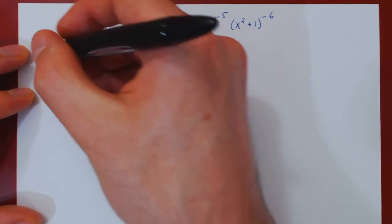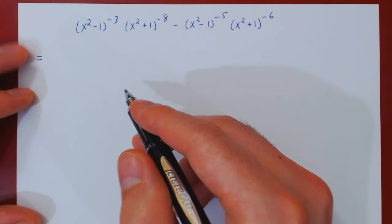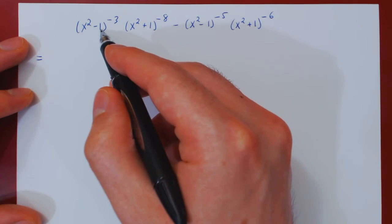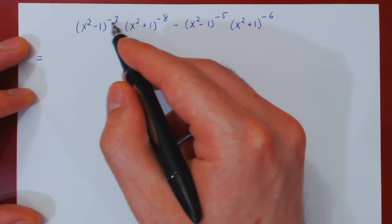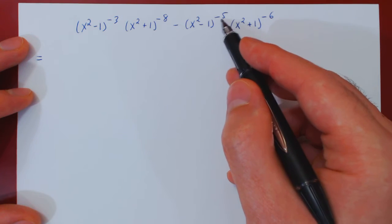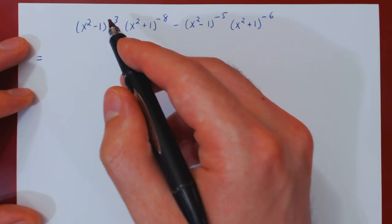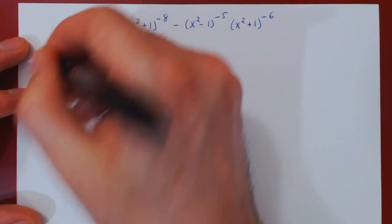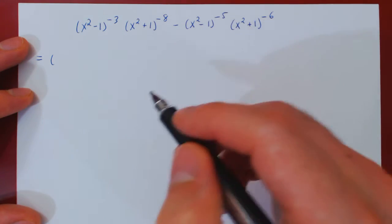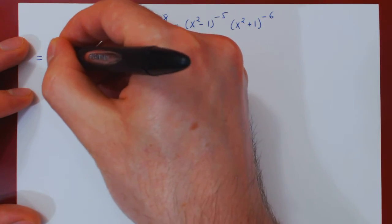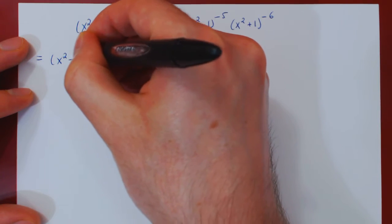So let's start with the first common factor, x squared minus 1. The power here is negative 3, the power here is negative 5. Negative 5 is less than negative 3, so we factor the negative 5 power. So we have x squared minus 1 to the negative 5.